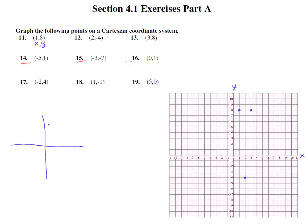Let's do 14, 15 and 16 in a different color so you can kind of see where they go. 14 is negative 5 on the X axis: 1, 2, 3, 4, 5 in the negative direction and up 1. So negative 5, 1 is right there.